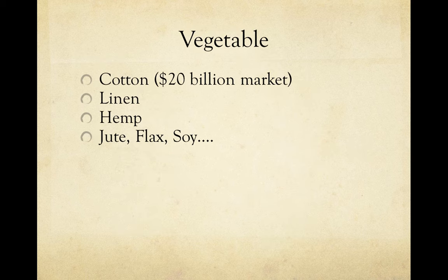Cotton is very prevalent — it composes a $20 billion market — so it's almost too common to be very helpful forensically speaking. Other types of vegetable fibers include linen, hemp, jute which makes burlap, flax, and soy.